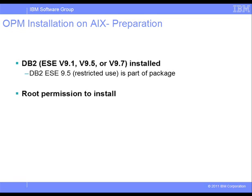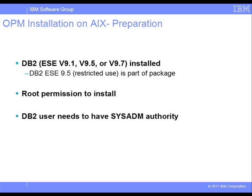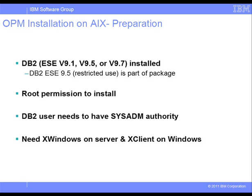Second, root permission is required to install. Third, a DB2 user ID with sysadmin authority is needed before the installation so that the user ID can access the repository database and server. As we will use a graphical user interface for the installation, we need xWindows server software on the server and xClient software on the Windows machine to connect to the server. If xWindows software is not available, the installer will use the command line mode.